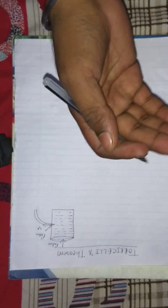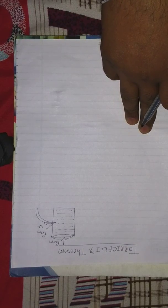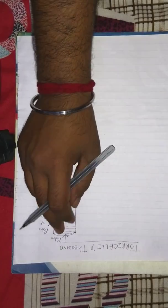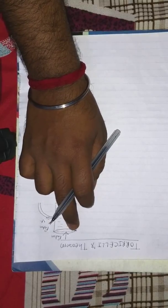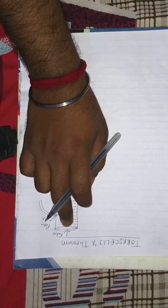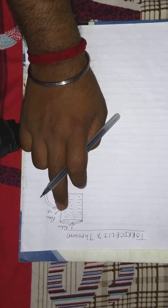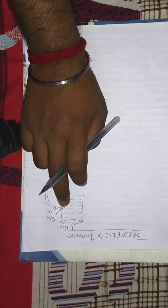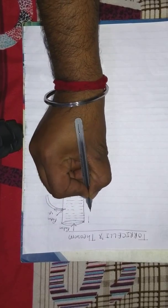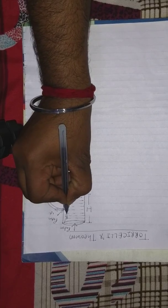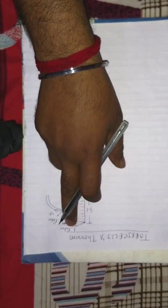From Bernoulli's principle, we know that the total sum of energy per unit volume is always constant for any liquid. We will apply Bernoulli's theorem to prove Torricelli's theorem. At the top, the velocity of the liquid particles is zero, so the kinetic energy at the top is zero. The velocity of liquid particles coming out of the hole is V, so the kinetic energy at that point is half rho V squared. The liquid is filled to a height capital H, and the hole is at a depth small h below the free surface.